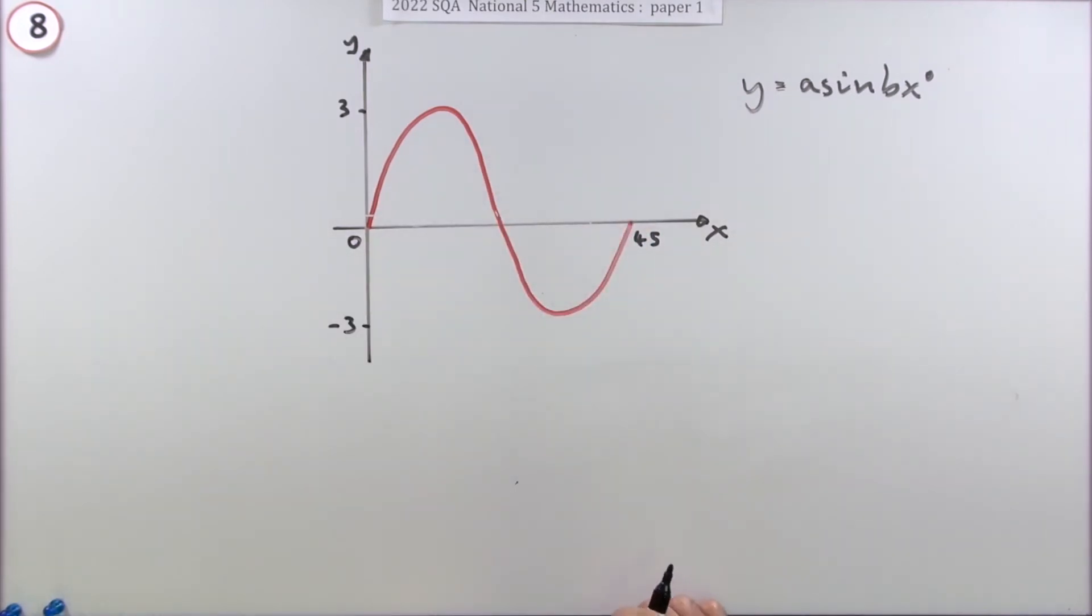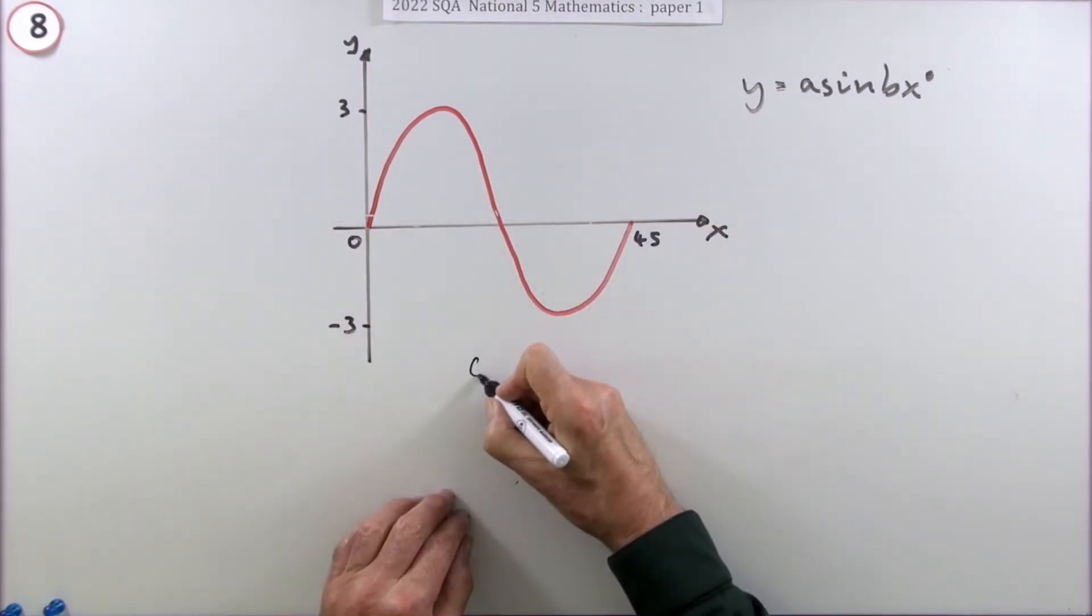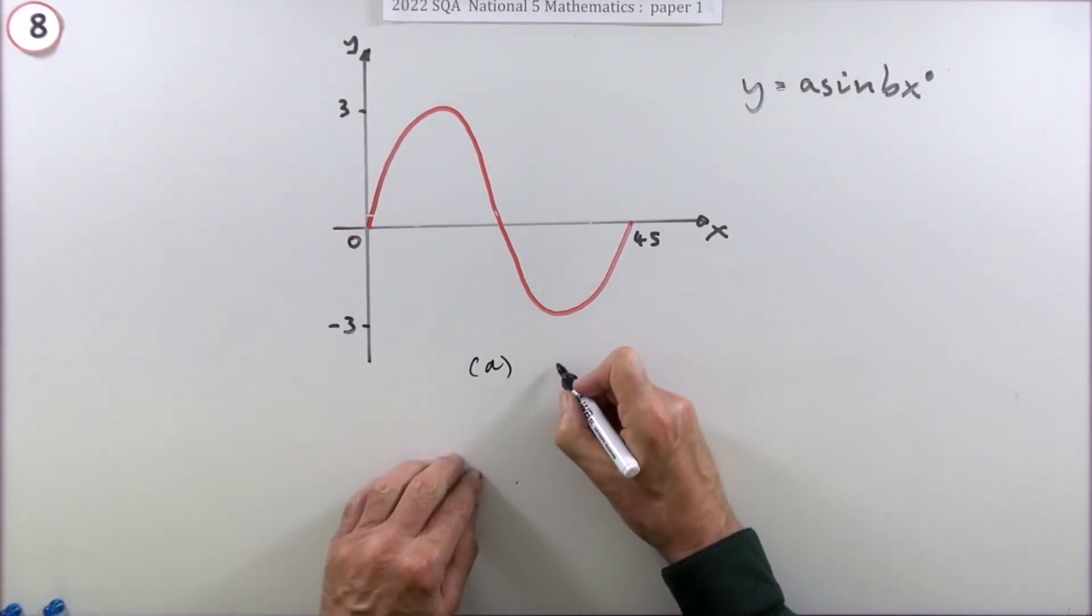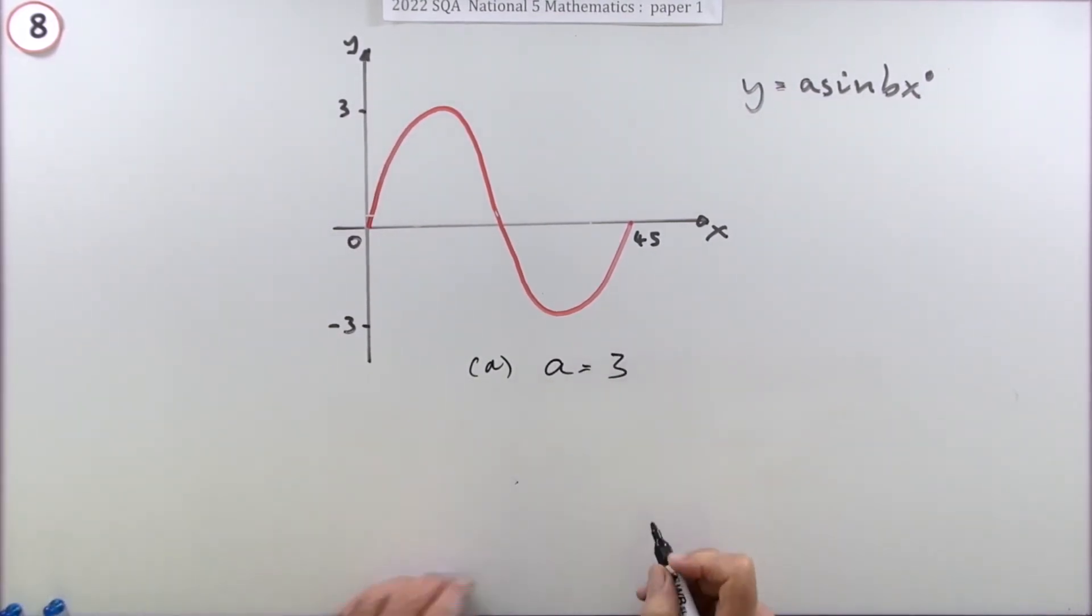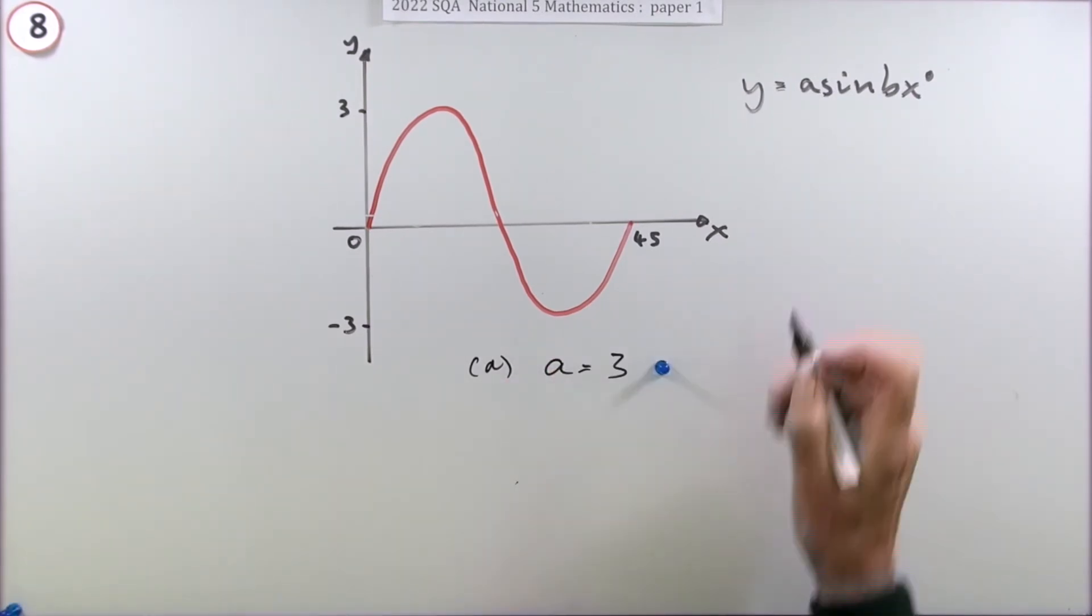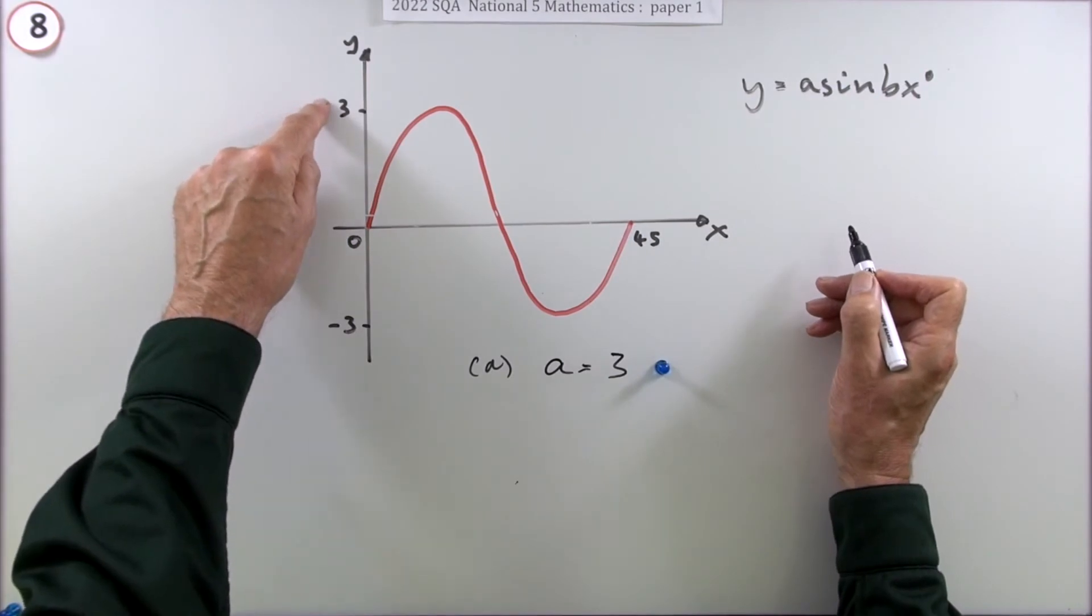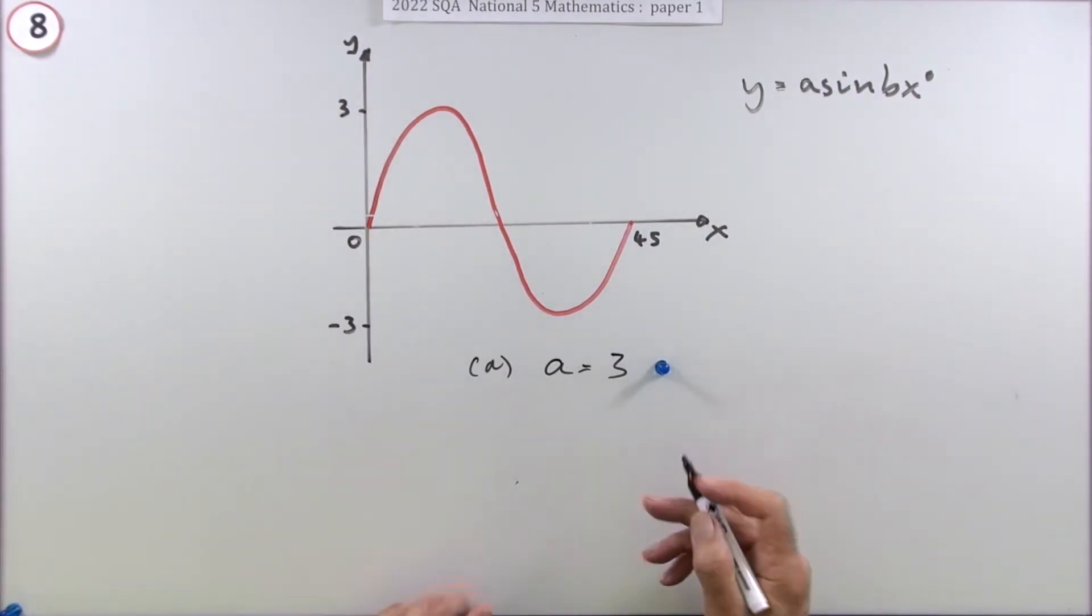A - what's its amplitude? Well, it's going up three, up three, down three. The amplitude's just three. That gets a mark. Remember, a sine should only go up as high as one, so if this has gone up to three, it's been multiplied by three.